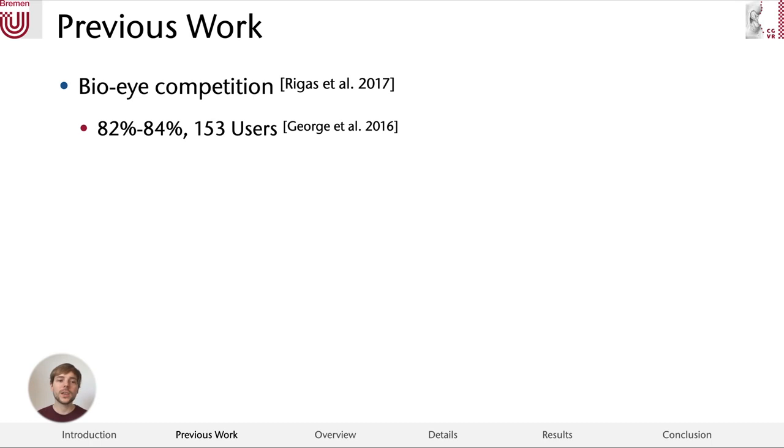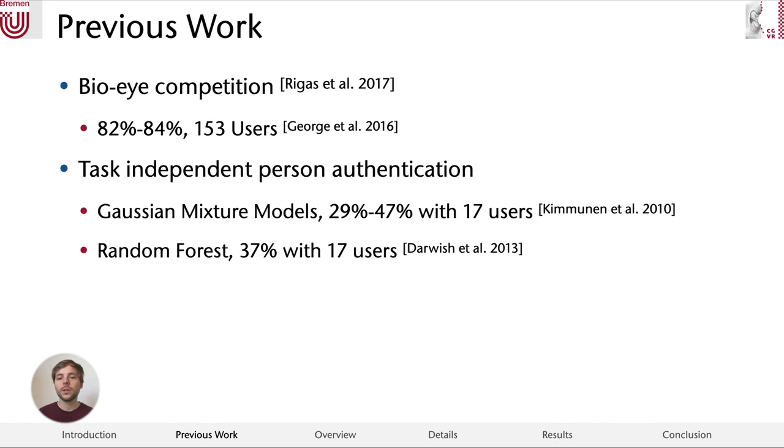Another area is task-independent person authentication. Here, for example, in the work by Kinnunen et al. from 2010, the user isn't required to read a poem each time but can do several things. Kinnunen et al. used Gaussian mixture models to build a background model for general gaze patterns and then model each user in regard to this background model. Another work is by Darwish et al. from 2013, where they use random forests and also identify 17 users with an accuracy of 37 percent.